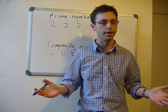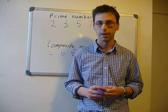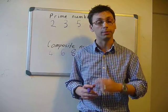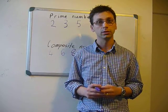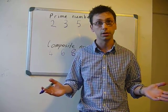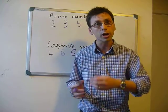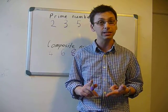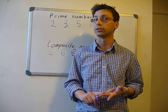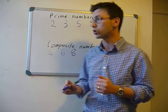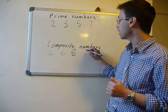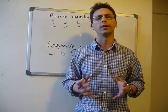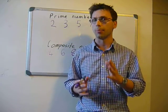What about nine? It's an odd number. But not all odd numbers are prime numbers. Because if you look at nine, we have three times three and nine times one. So yes, nine is a composite number. Not all odd numbers are prime.